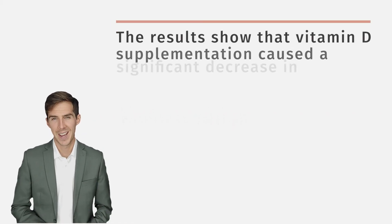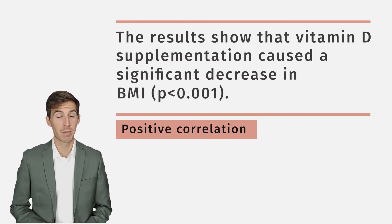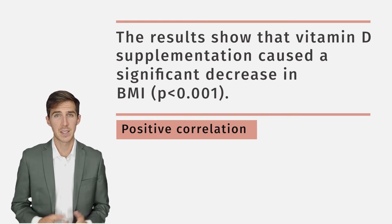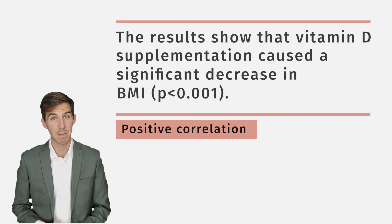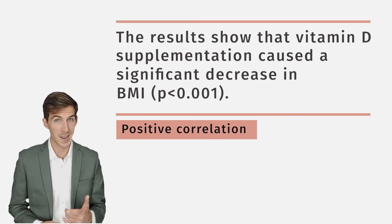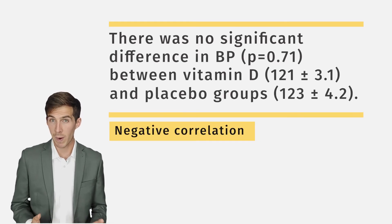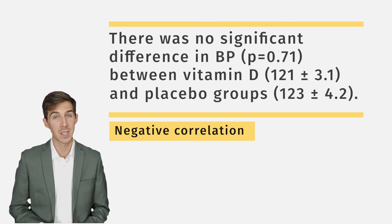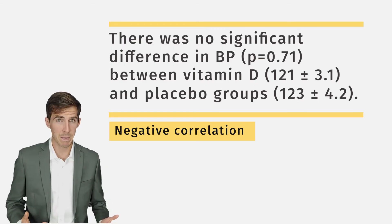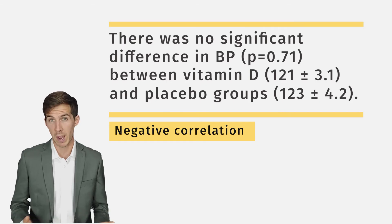Now let's start with the main finding. In our case, we found a significant drop in BMI among the cohort taking vitamin D supplements. Since we use the word significant, we must provide a p-value. The next result reports that there is no significant difference in blood pressure between the two groups. We also provide actual values in the text, in the format mean plus or minus standard error, as specified in the methods section.